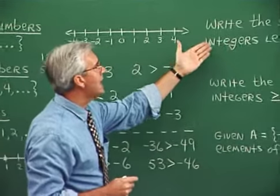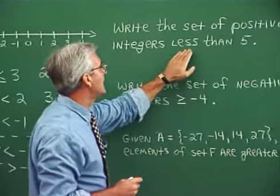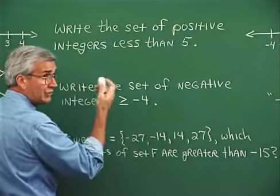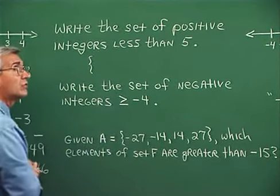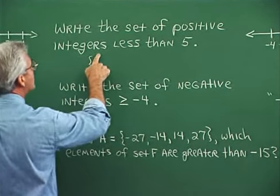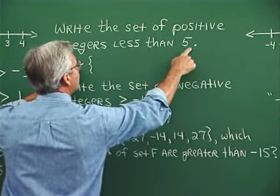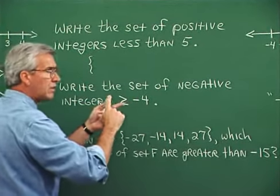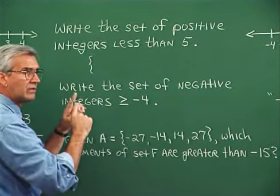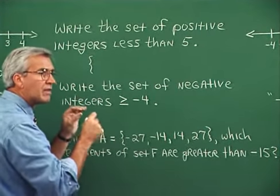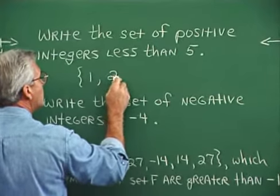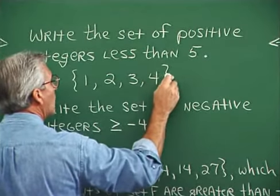Suppose we want to write the set of positive integers less than five. Using the roster method, we list the items within the set. We want positive integers strictly less than five — that means four, three, two, and one. We don't list zero because zero is neither positive nor negative; the first positive number to the right of zero is one. So this would be the numbers one, two, three, and four — the set of positive integers less than five.